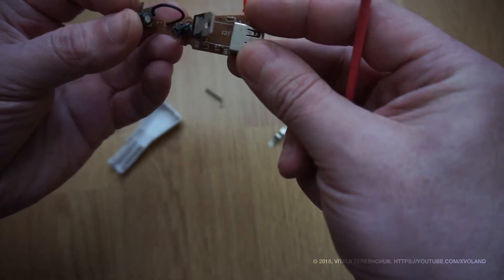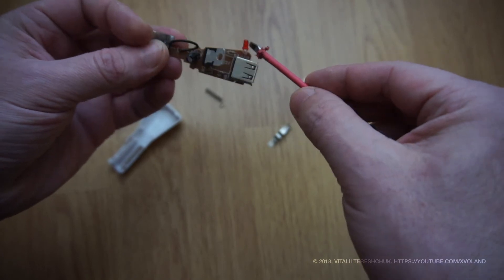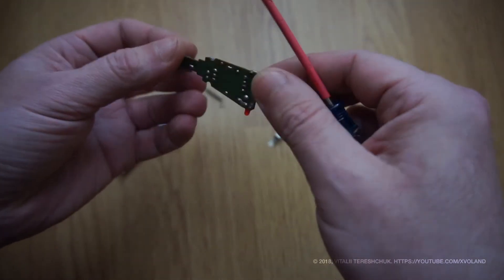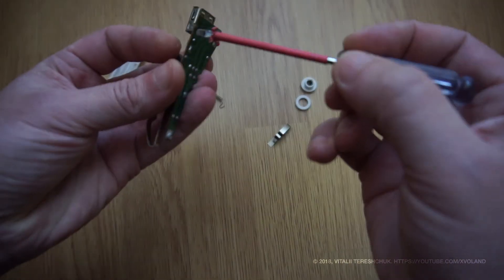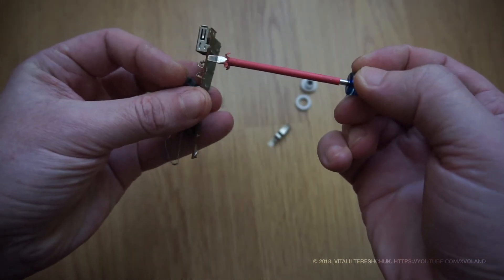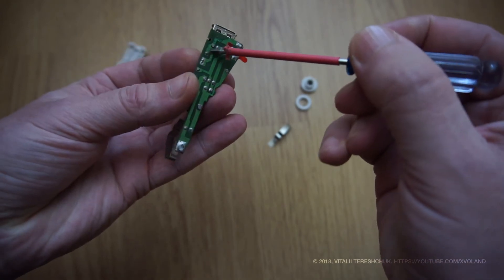7805 linear stabilizer, which is very hot during use, so it needs a heat sink. This is LED and a voltage divider on the data bus for identification of device.